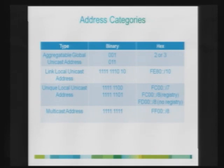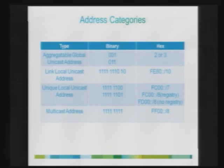For multicast addresses, the first 16 bits are all set to 1 — so FF00::/8 represents a multicast address. Multicast addresses themselves have different scopes, which we will see later. But if you see a prefix starting with FF, that indicates it is a multicast address.